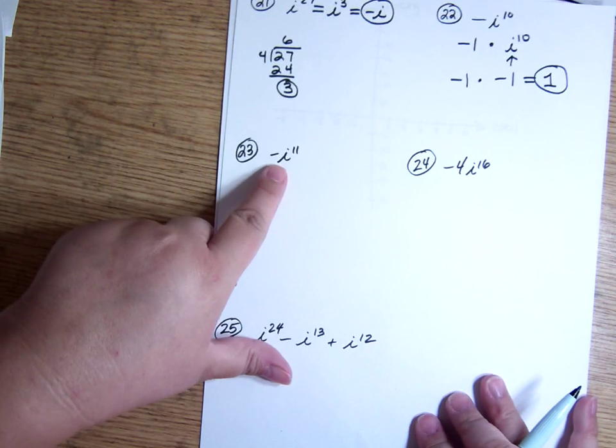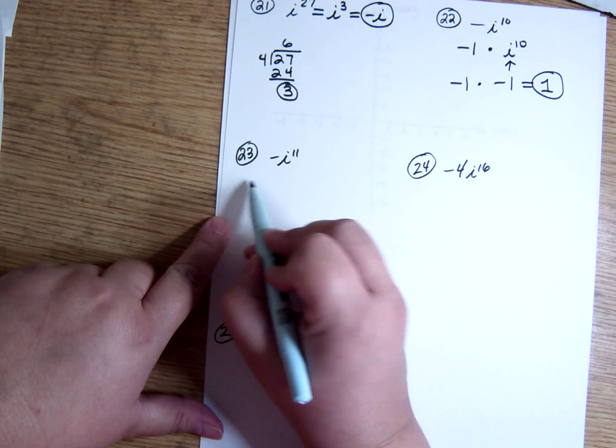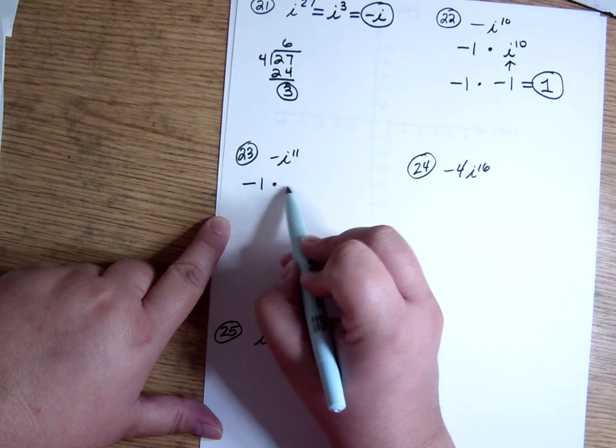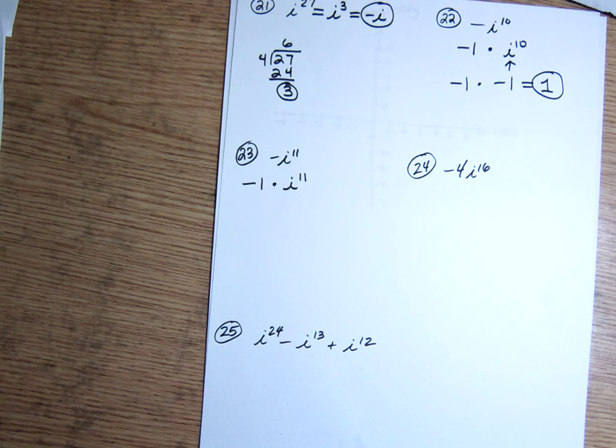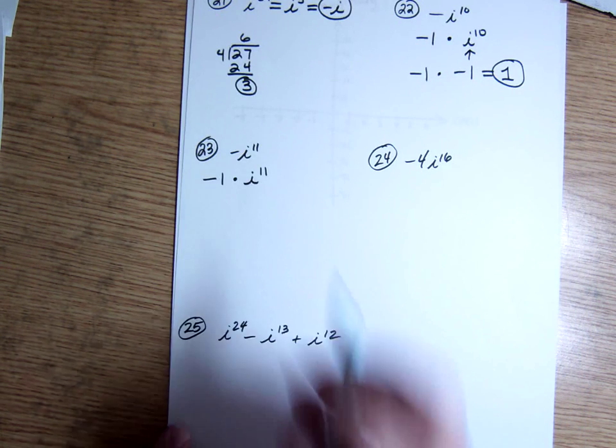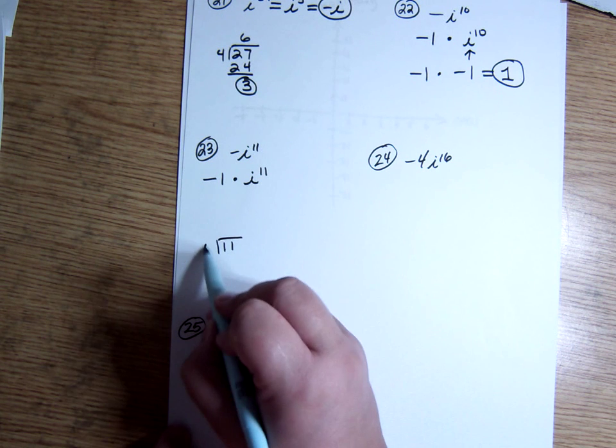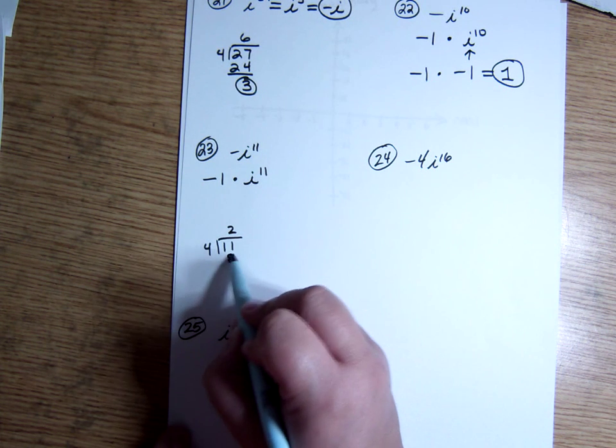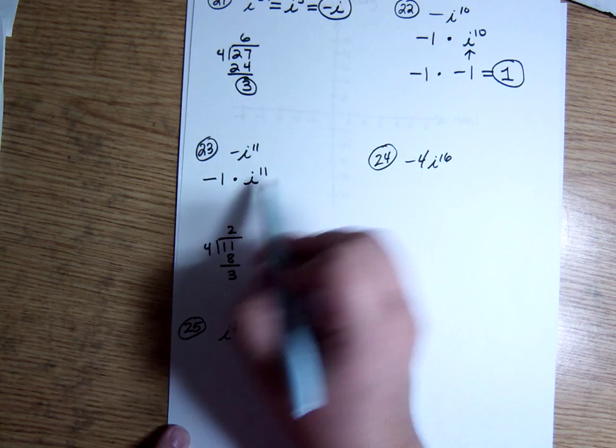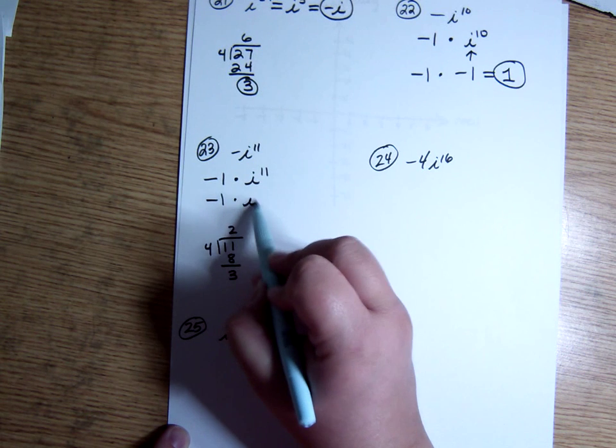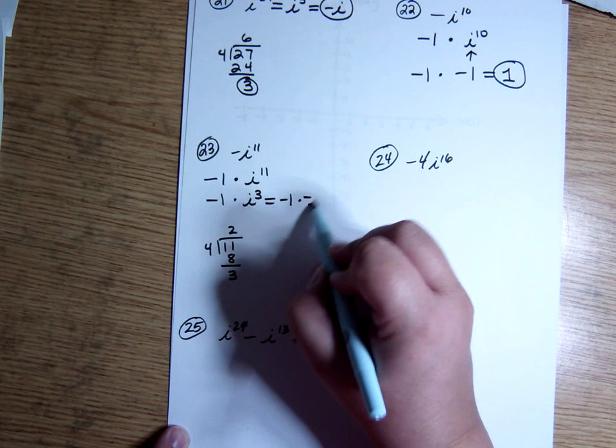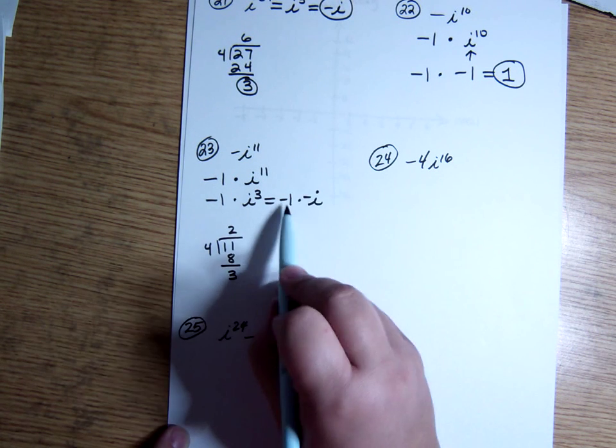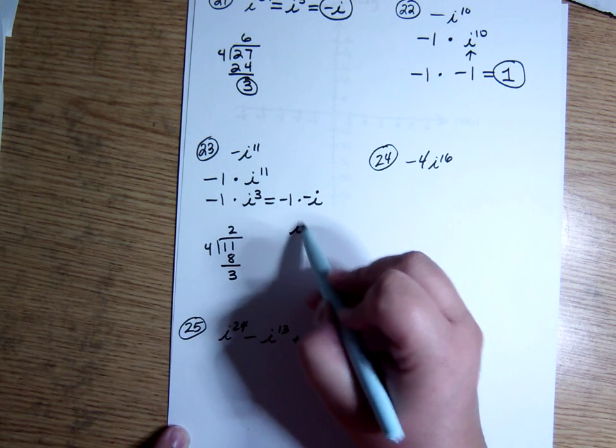Next one, negative, again, this is a negative that is not being raised to the eleventh power. So it means this: negative 1 times i to the eleventh. 11 divided by 4 goes twice with 3 left over. So this is the same thing as i to the third. i to the third is negative i. So negative 1 times negative i is just i.